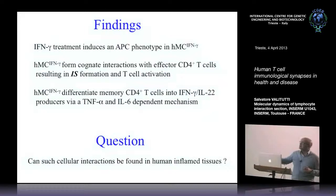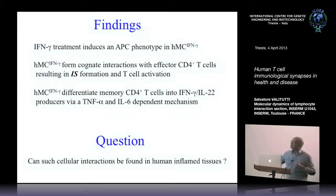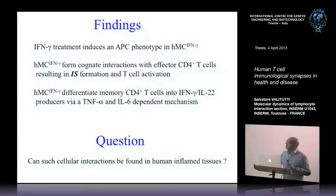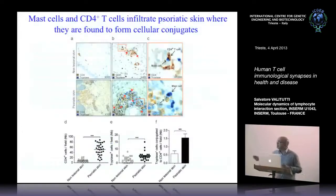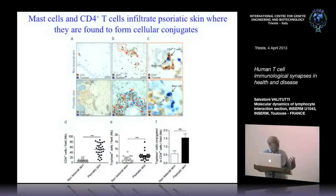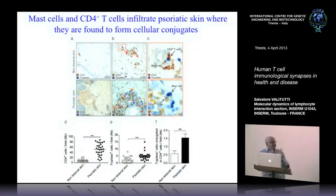This induction of IL-22 and interferon-gamma co-production required signaling via TNF-alpha and IL-6 receptor in T-cells. The key question was: if mast cells can present antigen and induce this peculiar population in human helper T-cells, can this interaction be found in human inflamed tissues? To address this, we focused on psoriasis, since this skin disease has been known for several years to be strongly dependent on the production of IL-22, which is a critical event in disease development.